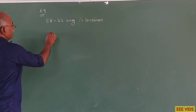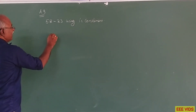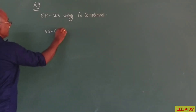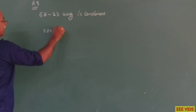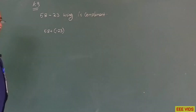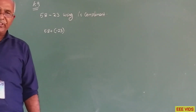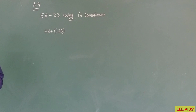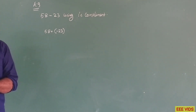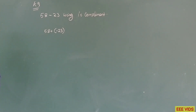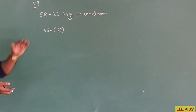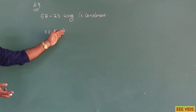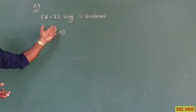How do we convert? 58 plus of minus 23. So 58 added to minus 23. Positive 58, and minus 23 is negative — that will be in binary.